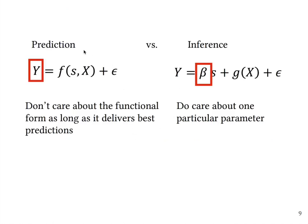If we have to compare prediction with inference, we will see that for prediction we usually don't care about the functional form as long as it delivers best prediction. We don't care what the recipe is as long as it provides the tastiest cake.